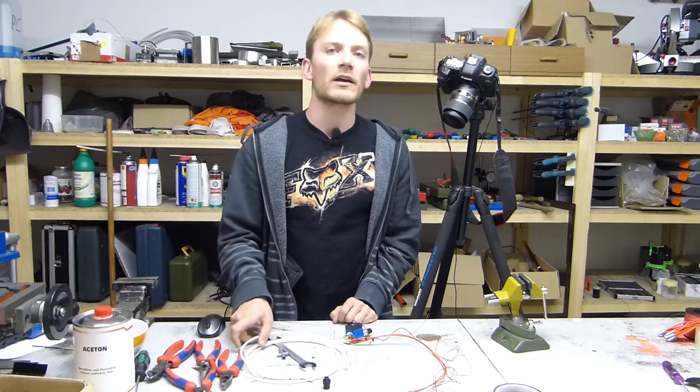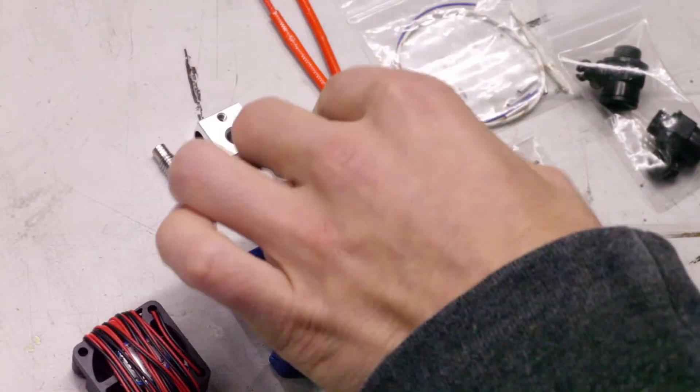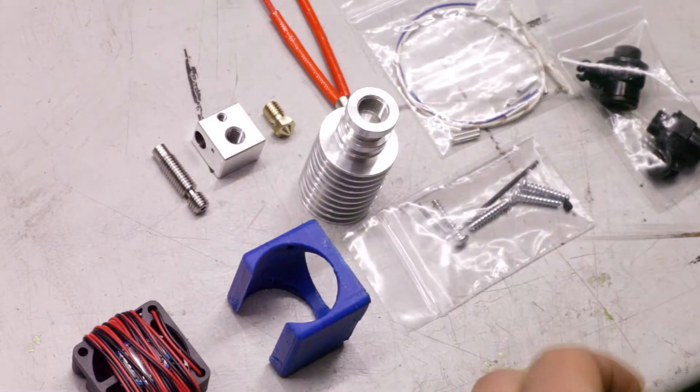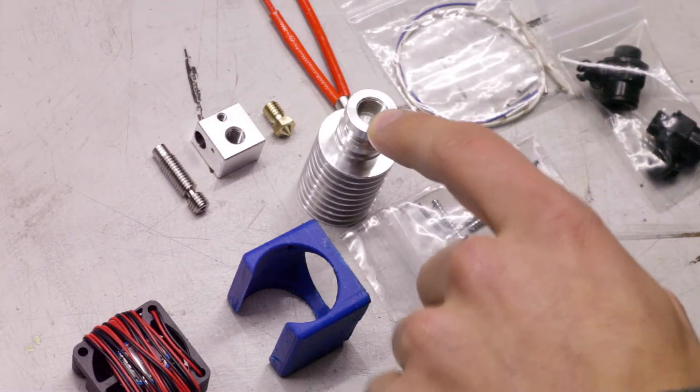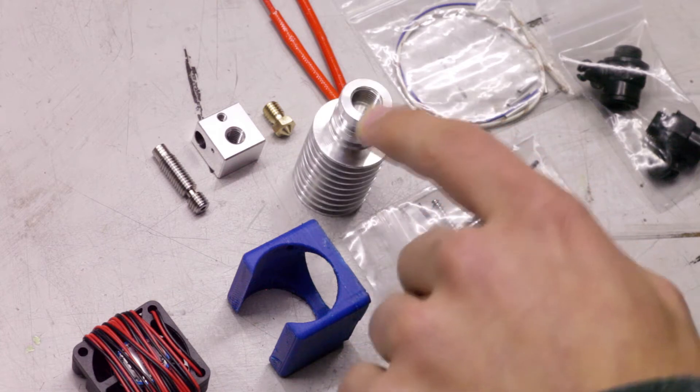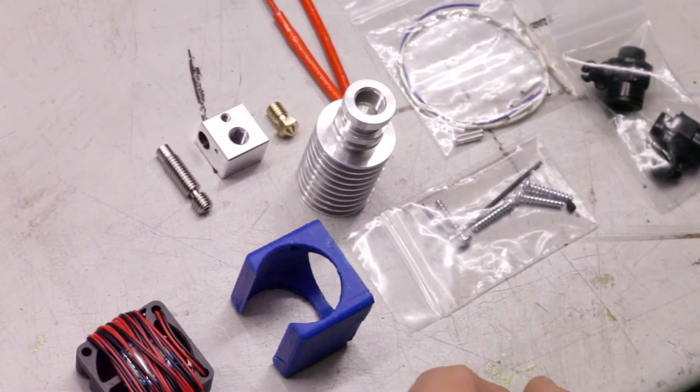Because I ordered a Bowden version, I also got the couplings for the Bowden tube and the Bowden tube itself. The only difference on the actual hotend from the direct drive to the Bowden version is the top end of the heatsink. The Bowden one has a thread for the coupler, the regular one simply has a flat top. Other than that, they are the exact same hotend.